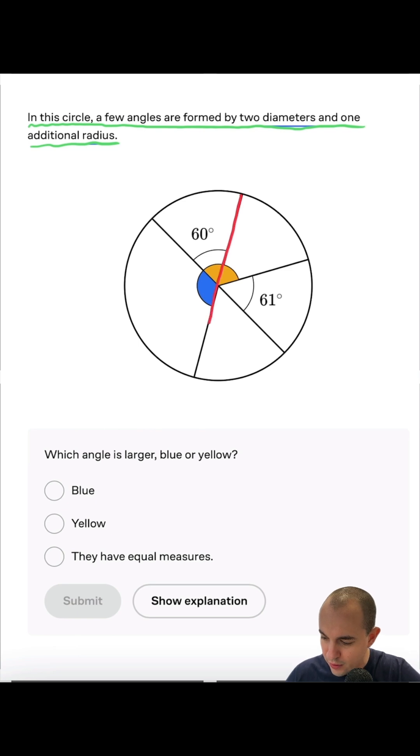Just to be sure that we understand the problem, here is the first diameter, and here is the second one. This part is the additional radius.